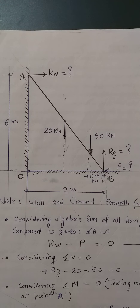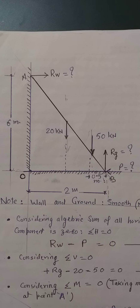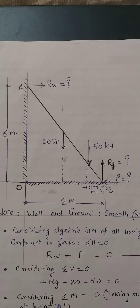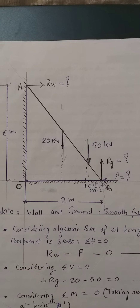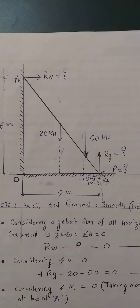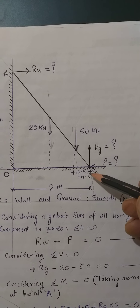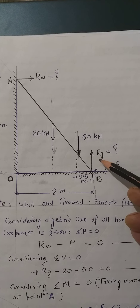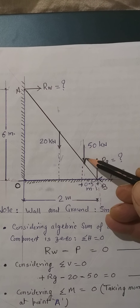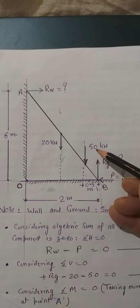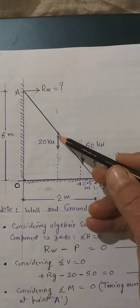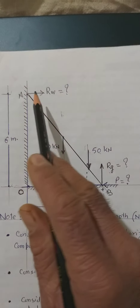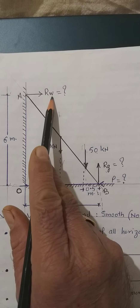One thing is clear: there is no friction between the ground and the ladder, and no friction between the wall and the ladder. Since it is frictionless, when it starts sliding, we have applied a horizontal force P. There will be a vertical reaction from the ground, which we write as Rg. The weight of the person standing on a rung is 50 kilo Newton, and the self-weight of the ladder acting at the midpoint is 20 kilo Newton. There is also a reaction of the wall, denoted by Rw.